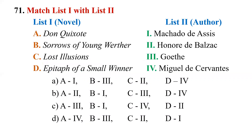Let's go to question number 71. Match List One with List Two. List One has novels, List Two has authors. Under List One we have: A - Don Quixote, B - Sorrows of Young Werther, C - Lost Illusions, D - Epitaph of a Small Winner. List Two has: 1 - Machado de Assis, 2 - Honoré de Balzac, 3 - Goethe, 4 - Miguel de Cervantes.